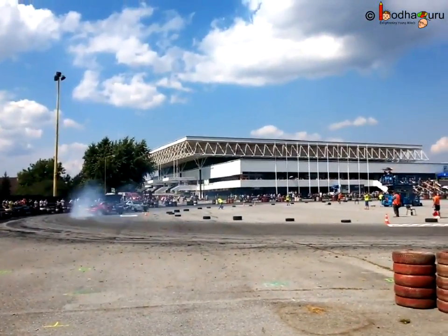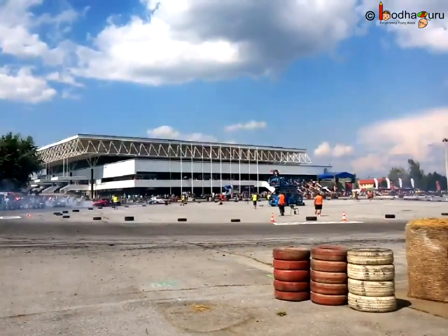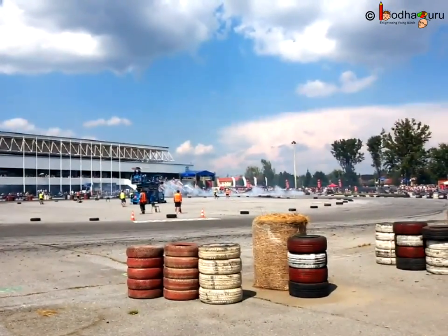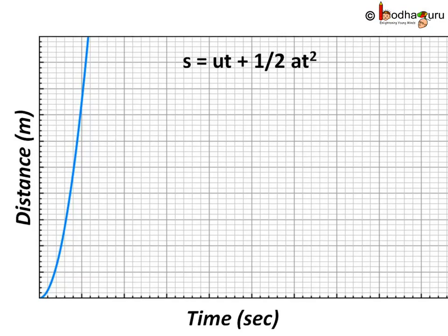We know when a car is travelling with acceleration a the distance travelled in t seconds is calculated using the formula s equal to ut plus half at square. How will the graph look like? It is a quadratic equation. So we can easily tell the graph would look like a curve like a parabola.